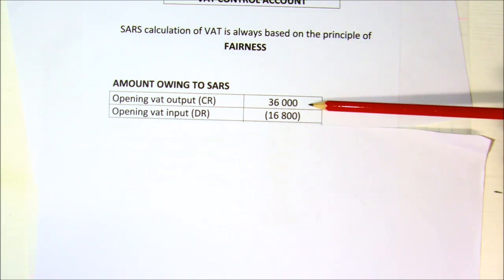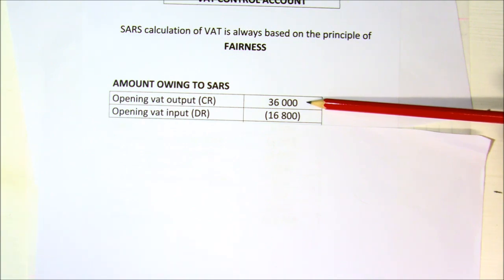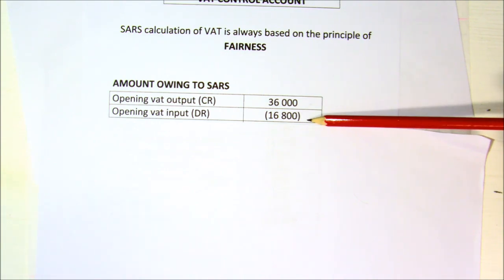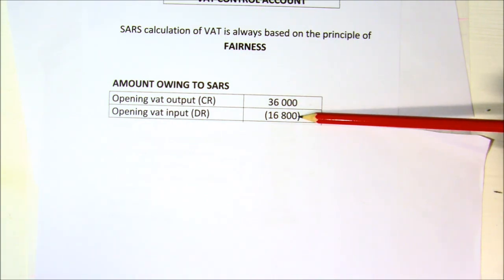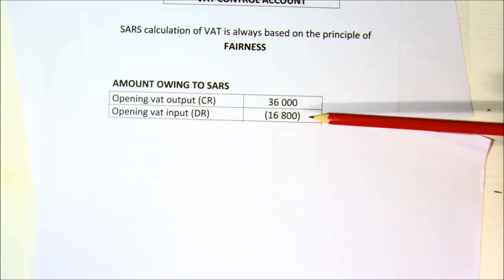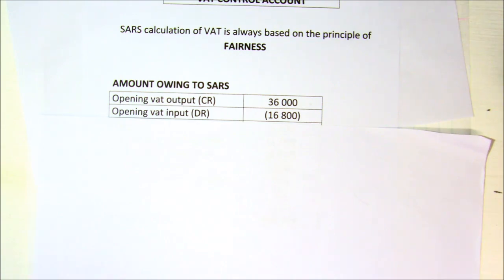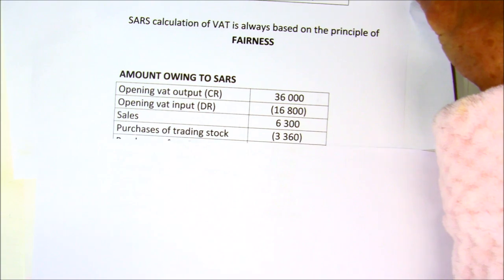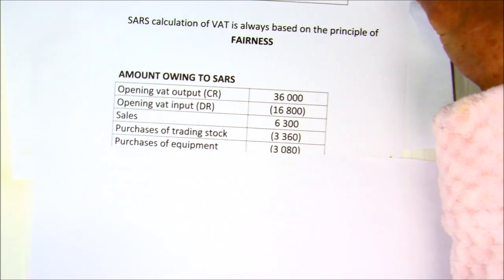At the end of September, you already owe SARS R36,000 from your goods that were sold. But you're also told that at the end of September you can claim back an input of R16,800, so that would be a minus because that money you can get back from SARS. I'm working through the table with figures already calculated, going through how you get it right.